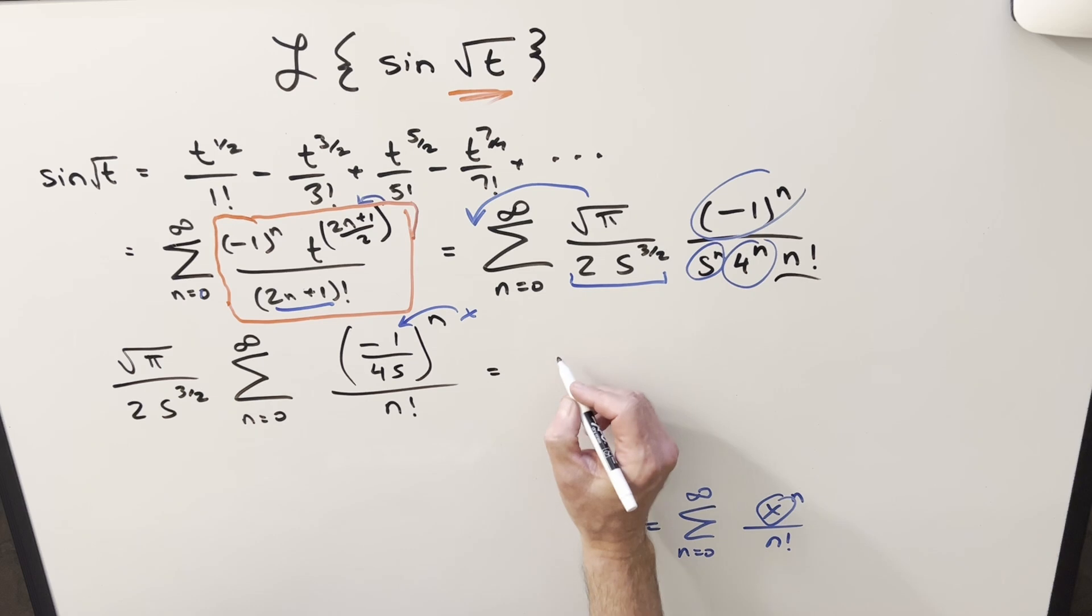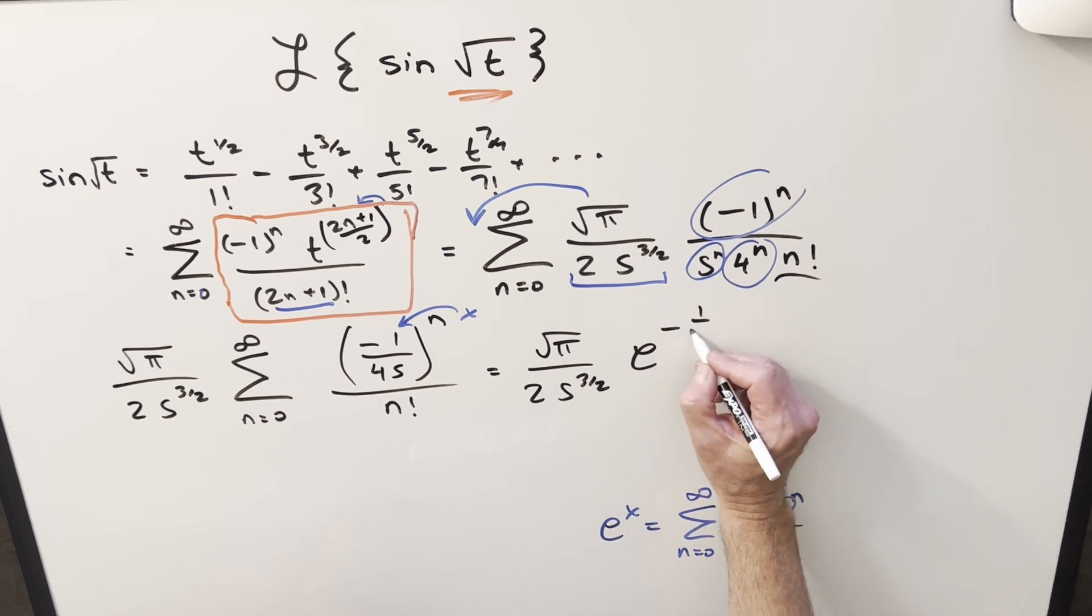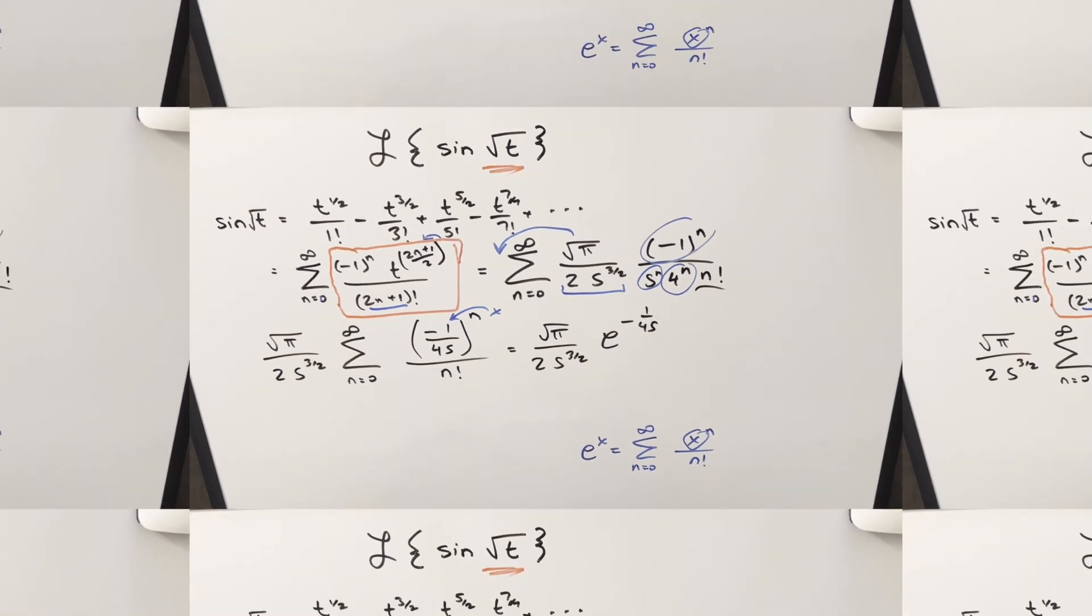So what we can do is just take and put it in this form, copying down all the constant stuff. And so using this, this whole thing here is just going to boil down to e to the minus one over 4s. And so for my final solution to this, we just get square root of pi times e to the minus one over 4s over 2s to the three halves, and that's it.